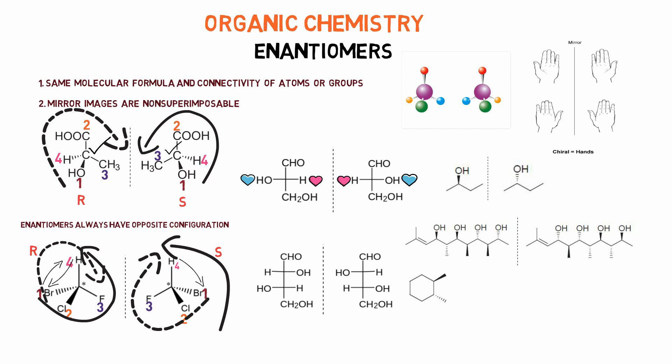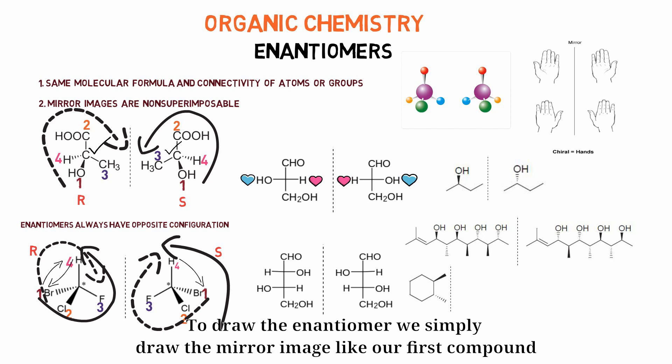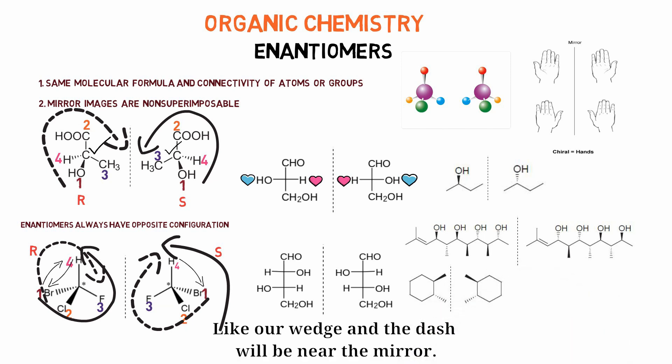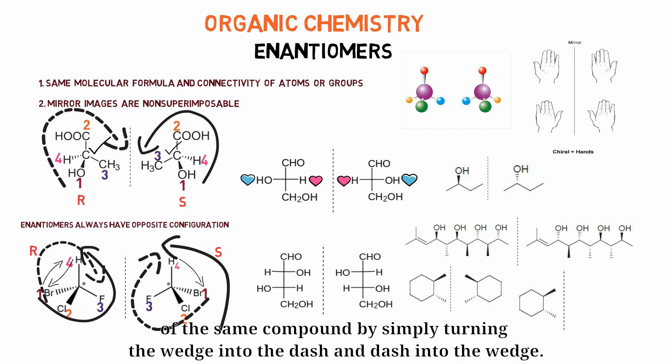Look at this one. We have a wedge and a dash. To draw the enantiomer, we simply draw the mirror image like our first compound, like our wedges and the dashes near the mirror. But we can also draw the enantiomer of the same compound by simply turning the wedge into the dash and dash into the wedge.